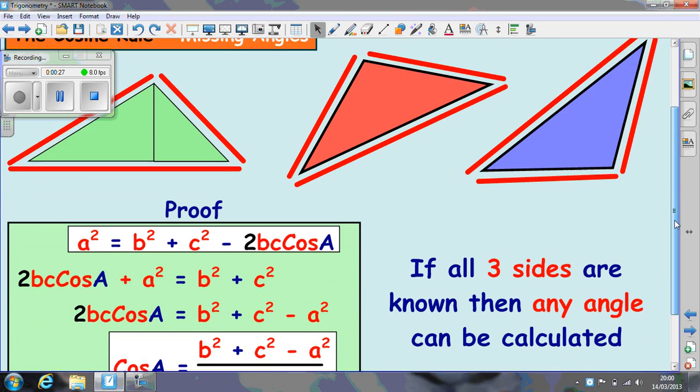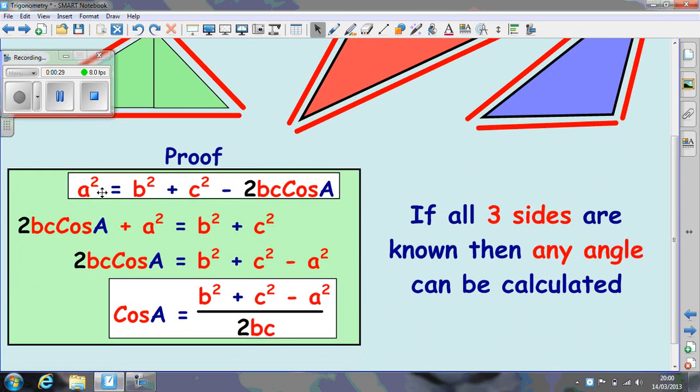Now, in the formula sheet, you'll see the two formulas separately, but one is just a rearrangement of the other one. The proof is shown here. Feel free to have a look at it. You don't require to be able to regurgitate this proof in an exam. You won't have to do that, but that's just to show you where it comes from. It's basically rearranging this top formula to get the one below.